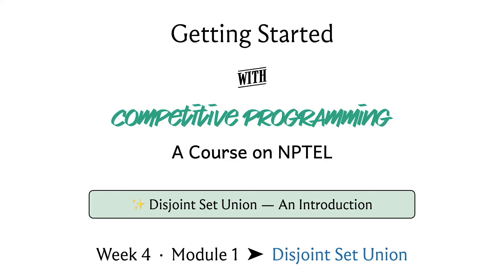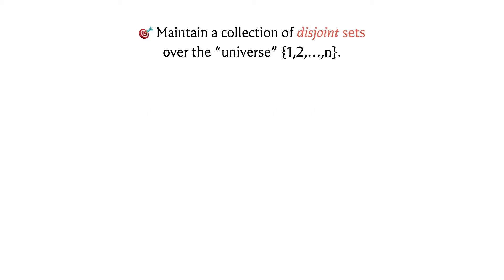The description of a data structure is fully specified once you tell me what information it is supposed to maintain and what operations on that information you want to support. We want to maintain a collection of disjoint sets over some fixed universe. Throughout this discussion I will use numbers from 1 to n to denote the elements of the universe. In a specific application the universe may not be numbers — it could be characters, vertices of a graph, or something else — but typically elements can be indexed by numbers 1 to n, so this is a convenient abstract notation.